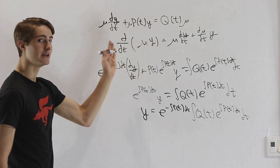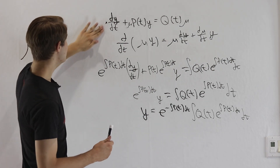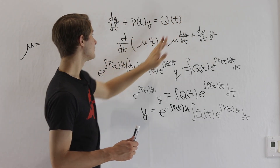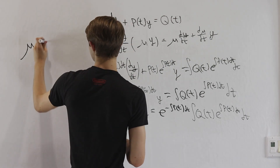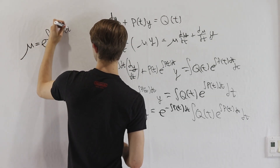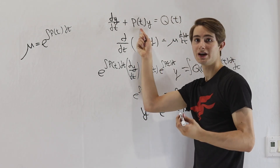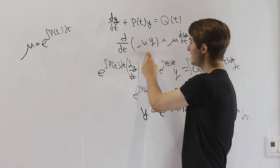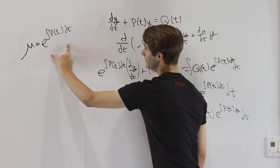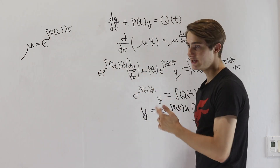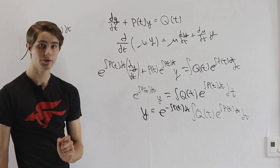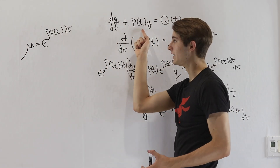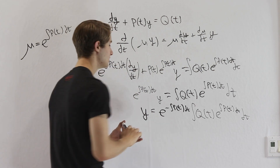Anytime you have a differential equation in this form — the derivative of y with respect to t plus some function times y — the way to solve it is by multiplying the whole equation by e to the integral of p(t), i.e., e to the integral of whatever is multiplied by y. When you do this, it turns into a product rule situation where you get the derivative with respect to t of that function times y. Then use the integral to cancel it out and isolate y. The key is this integrating factor: e to the integral of whatever multiplies y.